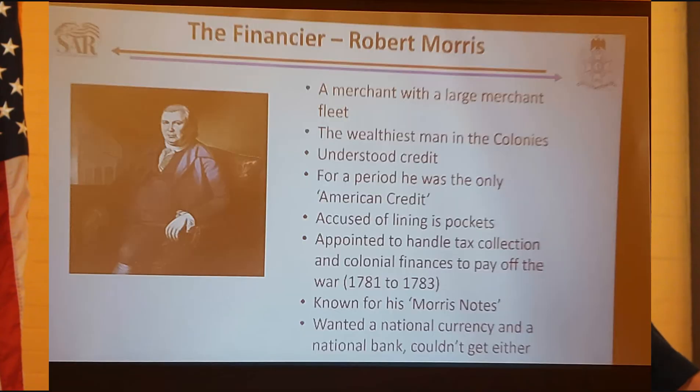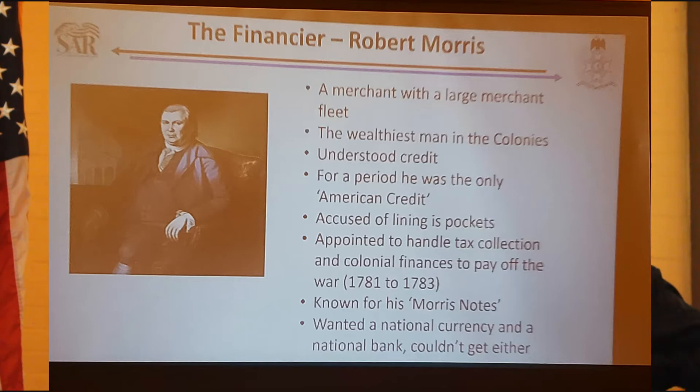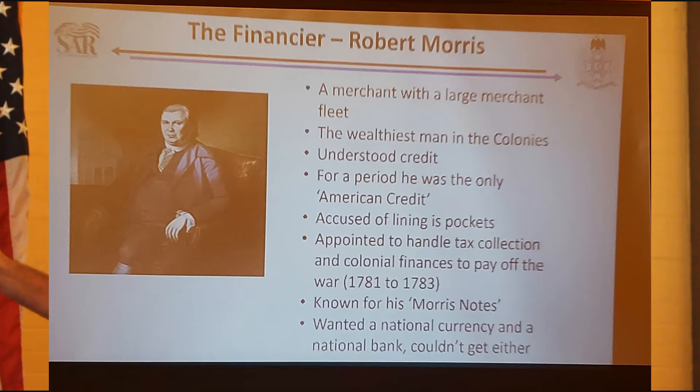Morris was born in England, came to the US as a young man, and got involved at age 13 with a merchant as an apprentice. Ten years later he was made a partner. He tripled the size of the fleet and became the richest man in Pennsylvania with a huge fleet of merchant ships and great credit overseas. When America was asking for things and sent Morris to represent them, the people at the other end were doing business with him personally—not necessarily with America—but he was representing America when he did it.